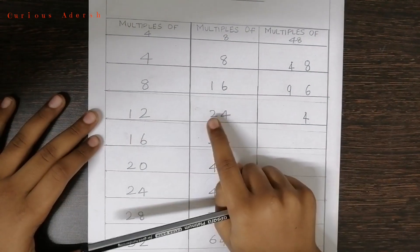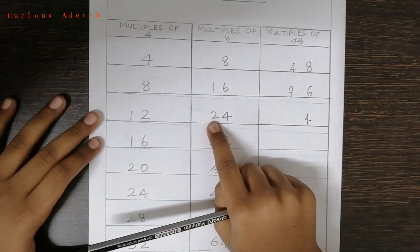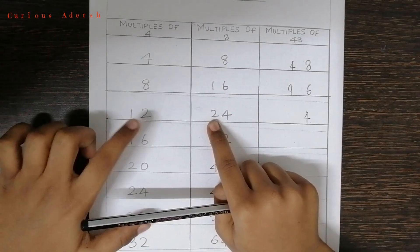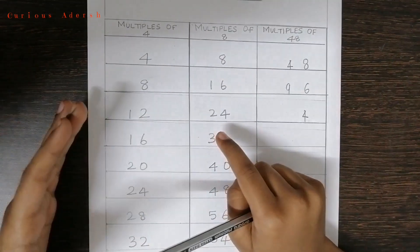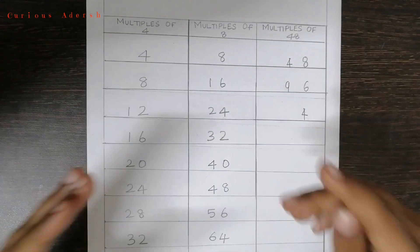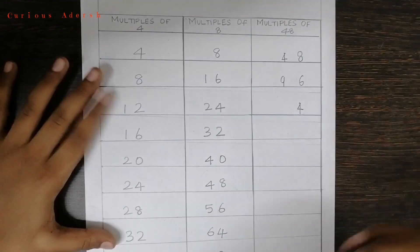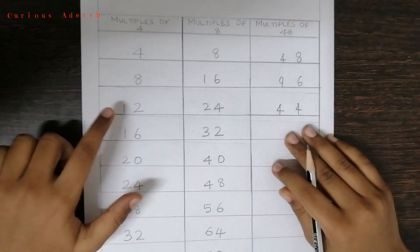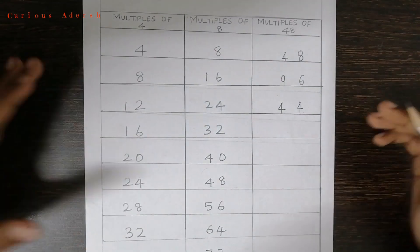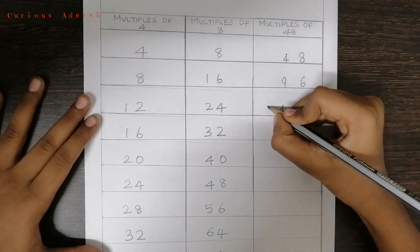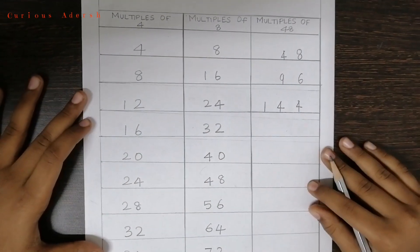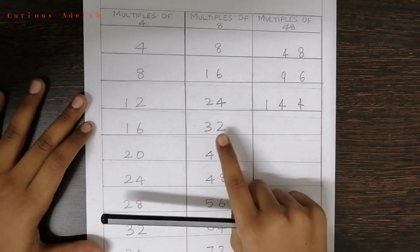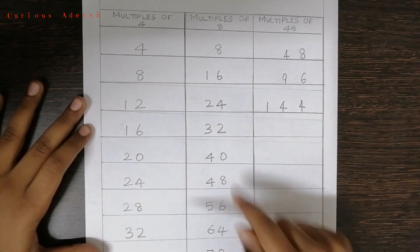Then we'll add the tens digit of the right side number with the ones digit of the left side number. 2 plus 2 is 4, and we'll write this 1 as it is — giving us 144.